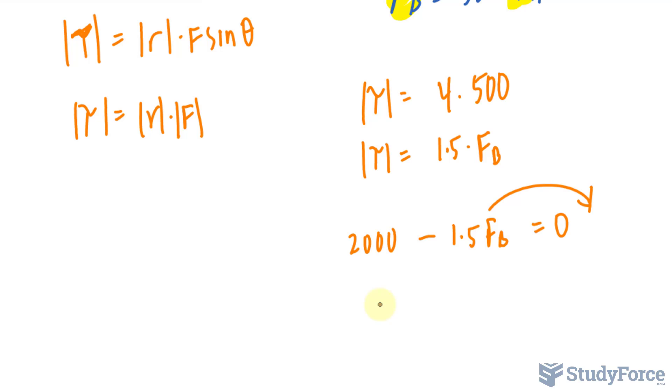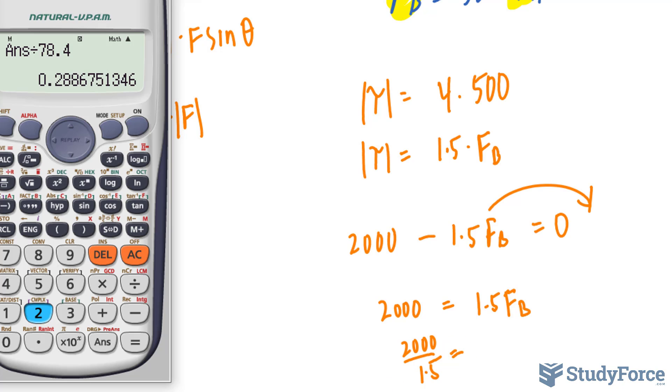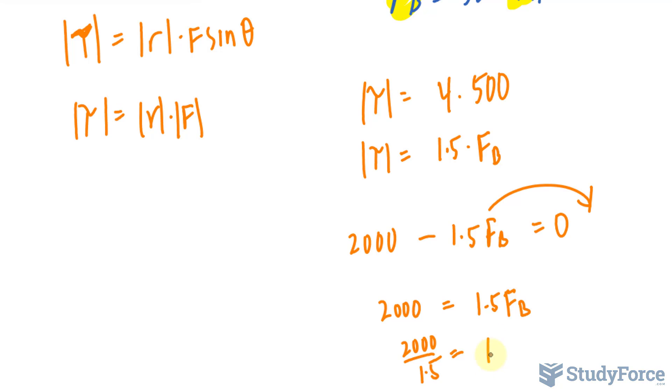So I'll solve for F sub B. 2000 is equal to 1.5 F sub B. Dividing both sides by 1.5, let's see what happens. We get a force that is 1,333.3. I'll just leave it as 1,333 newtons.